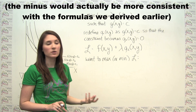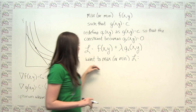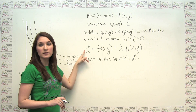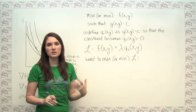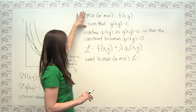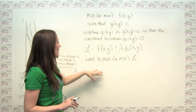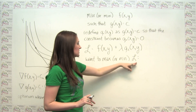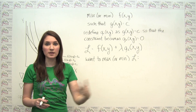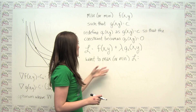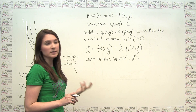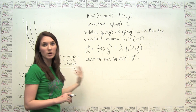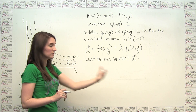We then want to either maximize or minimize this L, because doing so gives us the solutions to the original constrained optimization problem. Our choice variables are x, y, and lambda. To maximize or minimize L, we take partial derivatives and set them equal to zero: ∂L/∂x = ∂f/∂x + lambda · ∂g₂/∂x = 0, and ∂L/∂y = ∂f/∂y + lambda · ∂g₂/∂y = 0.